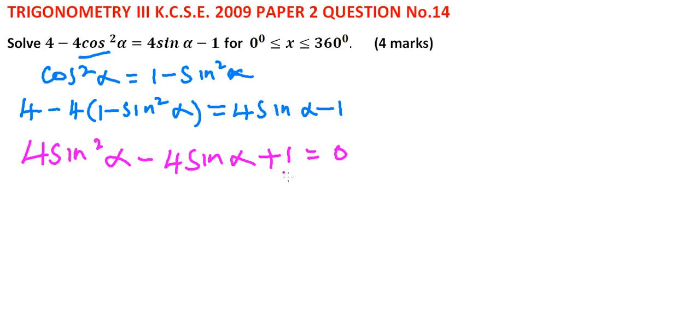This is a quadratic equation. We can factorize this. We can rewrite this equation as 4 sin squared alpha minus 2 sin alpha minus 2 sin alpha plus 1 is equal to 0. When you factorize this,